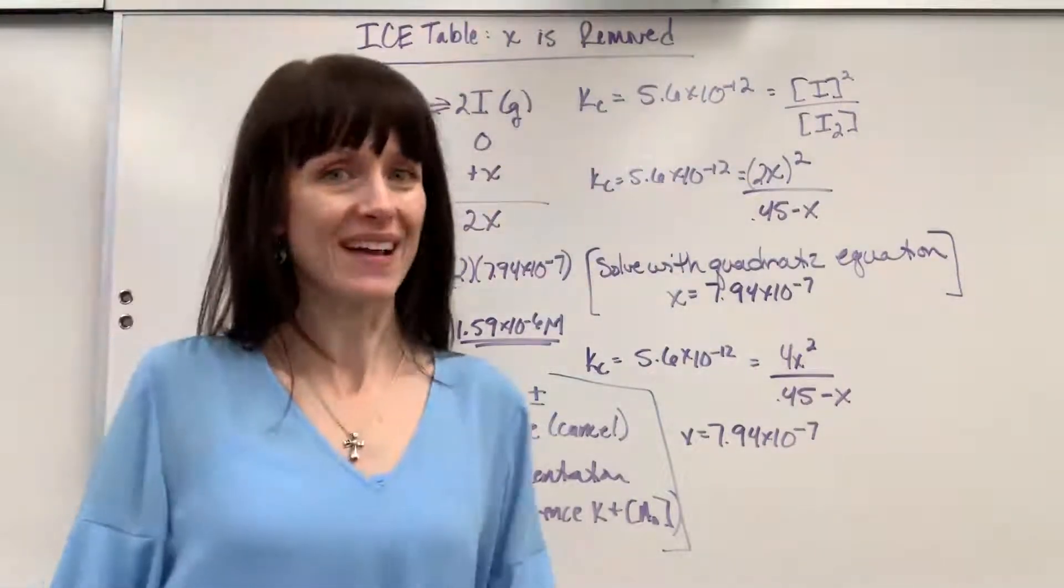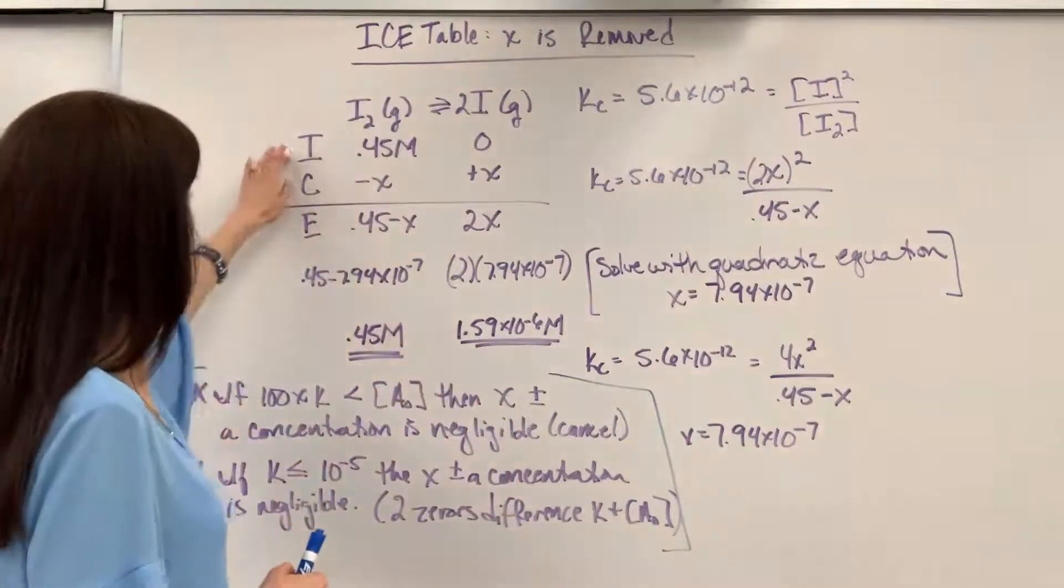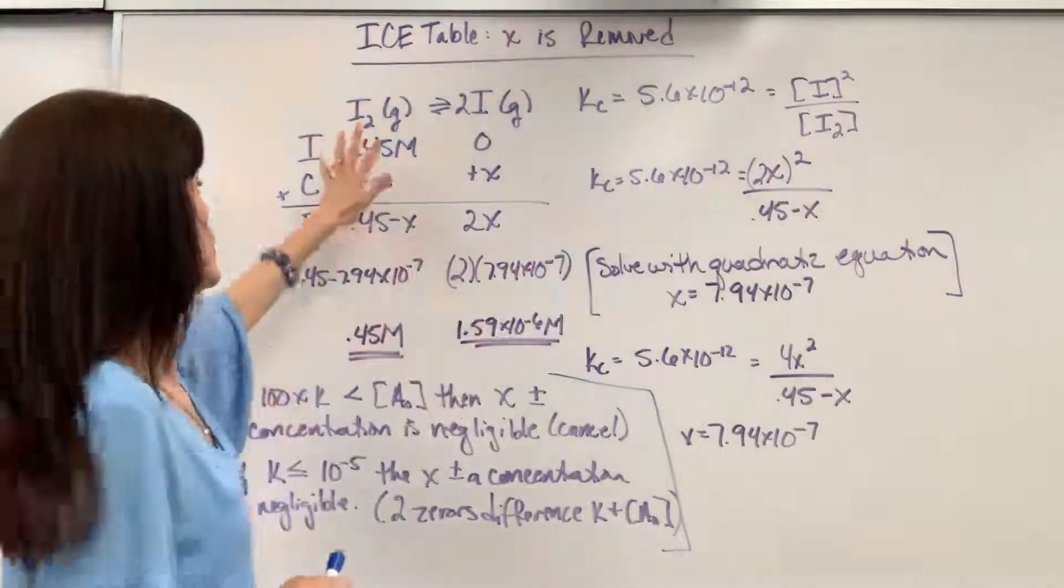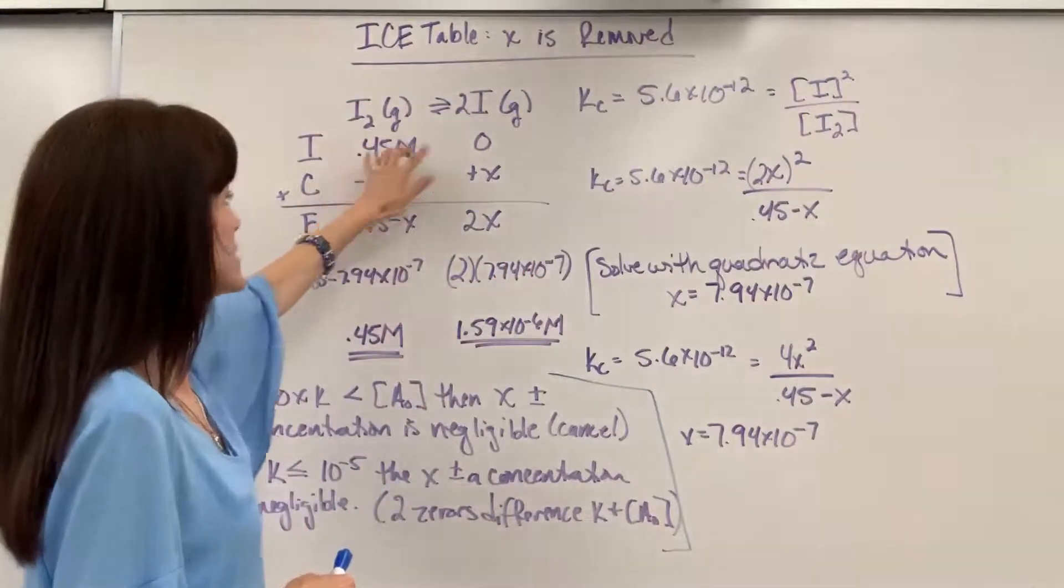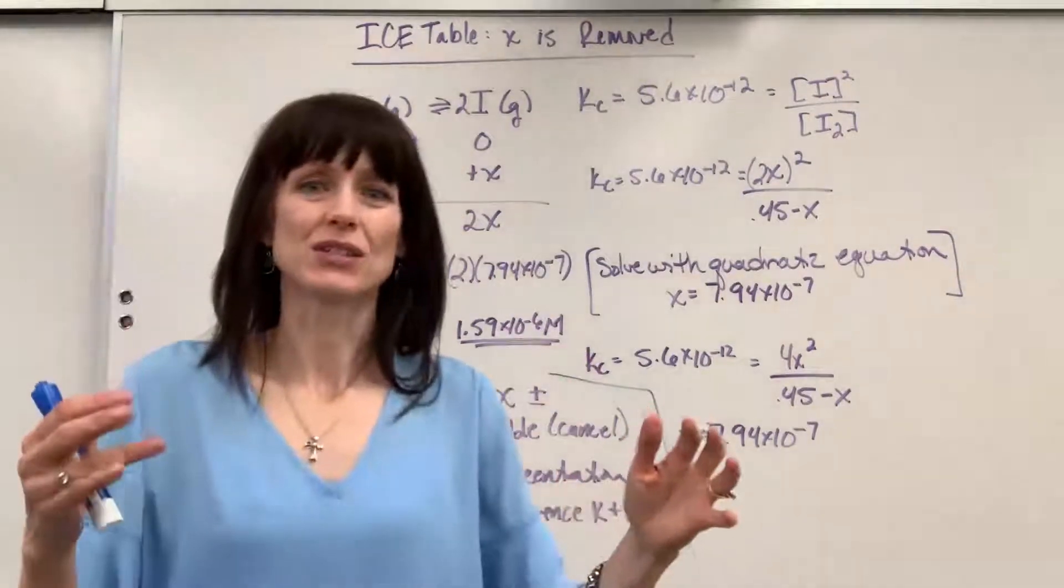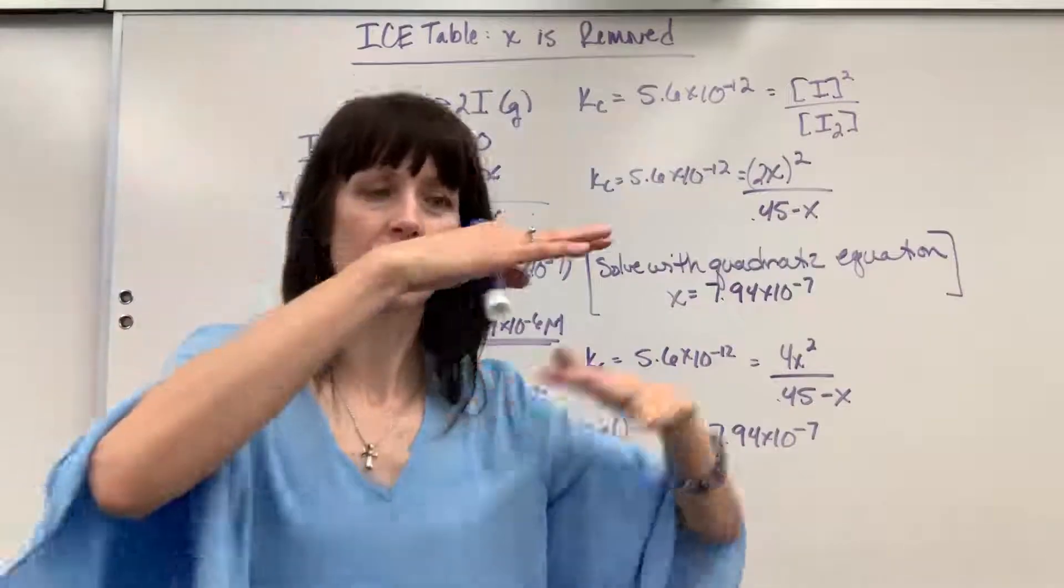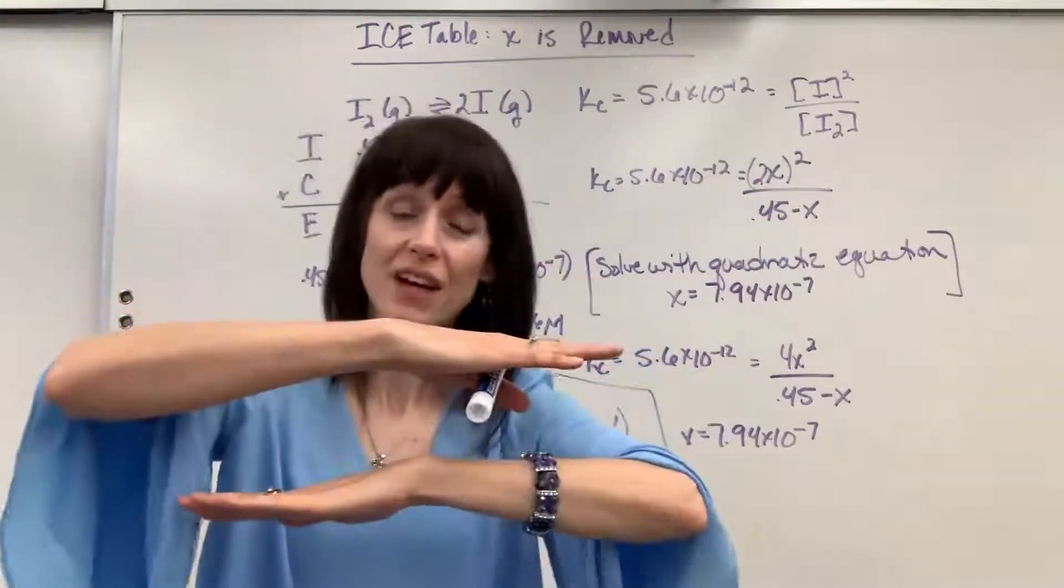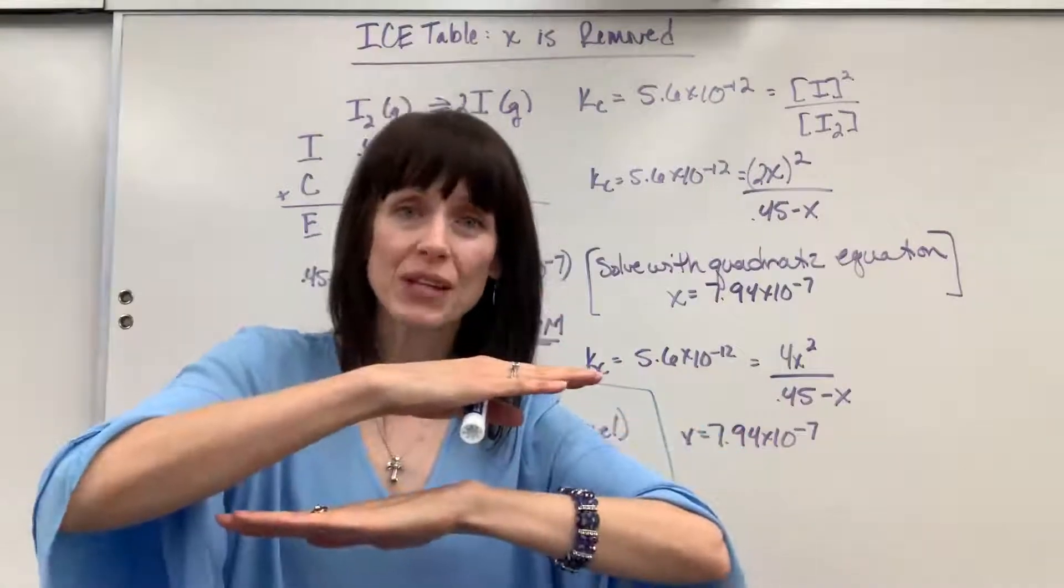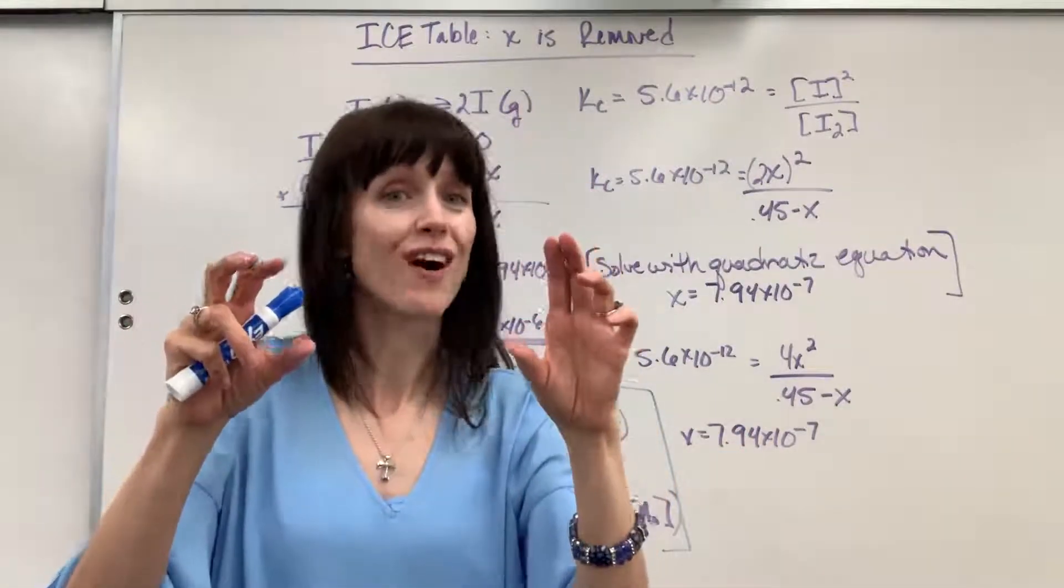The way we do that is with the ICE table. So the initial concentrations, you start with before any reaction, with a 0.45 reactant, so there's zero product. We change, so this reaction is going to go forward and the reverse, forward and reverse, finally until the forward rate equals the reverse rate. And when we hit that beautiful equilibrium, the concentrations are constant.